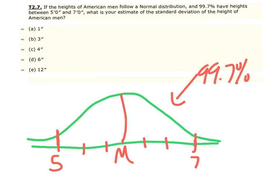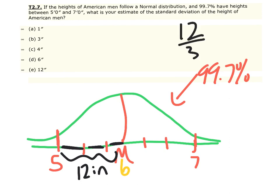The area under the curve covering 99.7% spans from five to seven feet. From the mean of six feet down to five feet is one complete foot, or 12 inches. That distance covers three standard deviations, so we divide 12 by 3, which gives approximately 4 inches as the standard deviation of the height of American men.